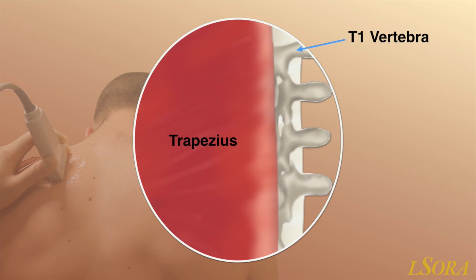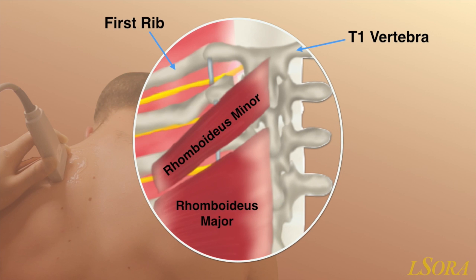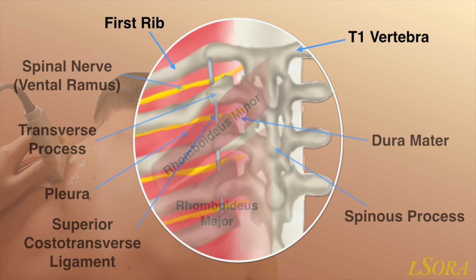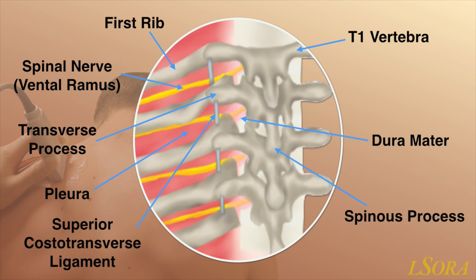The T1 vertebra has been shown here for orientation. Deep to trapezius you will see the rhomboid major and rhomboid minor muscles. Deep to these muscles, you will see the vertebral body with its corresponding spinous process and transverse process, the costo-transverse junction and the rib articulating with the transverse process.